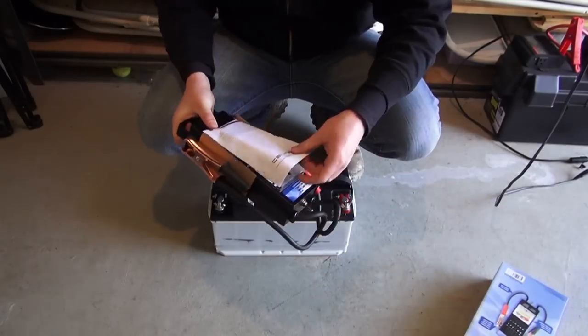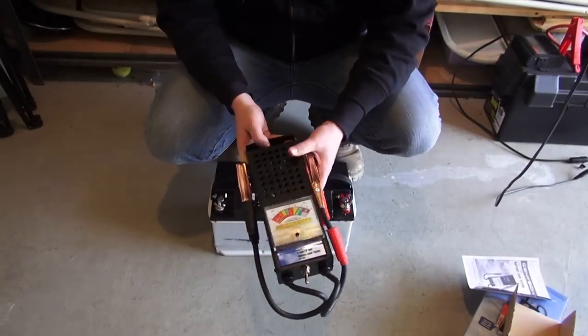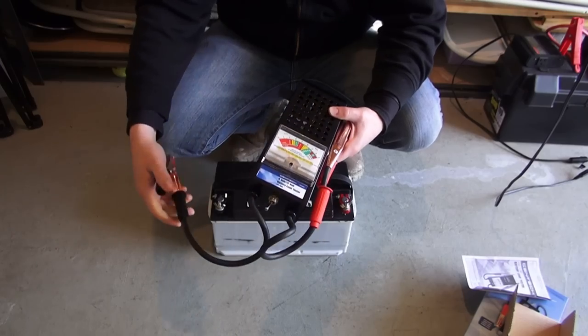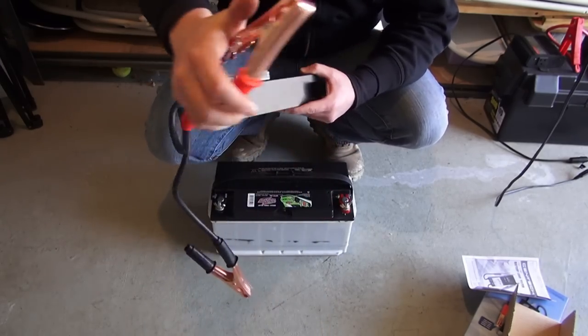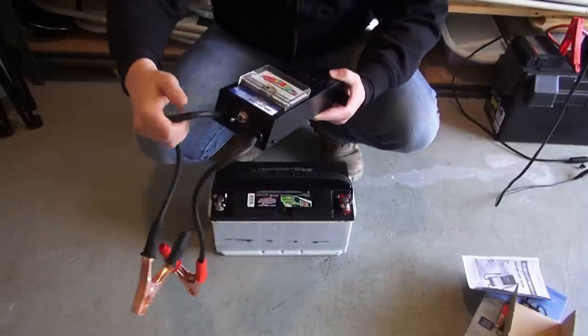Inside you have an instruction manual and this contraption. What this consists of is two terminals, two battery terminals, a plus and a minus, and you have a gauge.